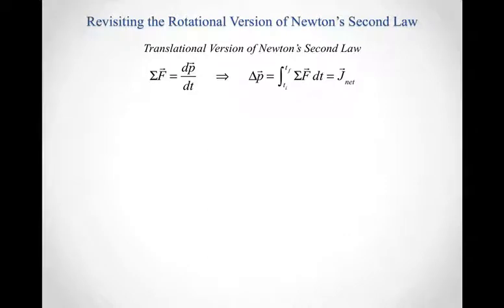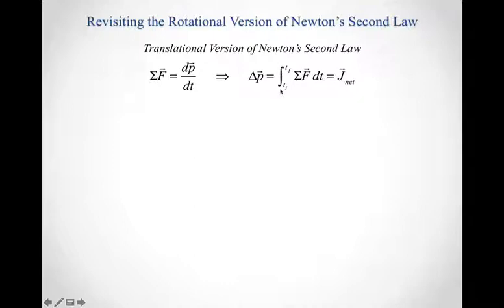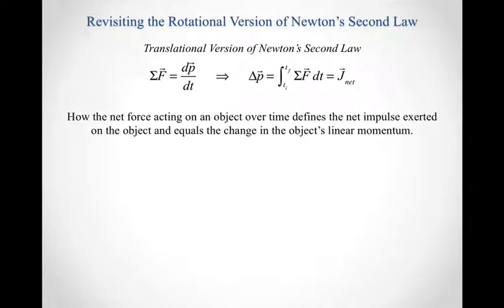We reframed Newton's second law: the net force equals the time rate of change of linear momentum. That's a derivative equation, which we can turn into an integral equation — the impulse-momentum theorem. The change in momentum of an object equals the integral over time of the net force times dt. This tells us that how the net force acts on an object over time defines the net impulse exerted on the object, which equals the change in the object's linear momentum.